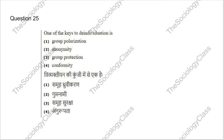Question 25: One of the keys to de-individuation is — group polarization, anonymity, group protection, or conformity? The correct answer is B — anonymity. De-individuation occurs when you are part of a group and gradually lose your self-identity and individual identity. It is a psychological concept worth reading carefully.